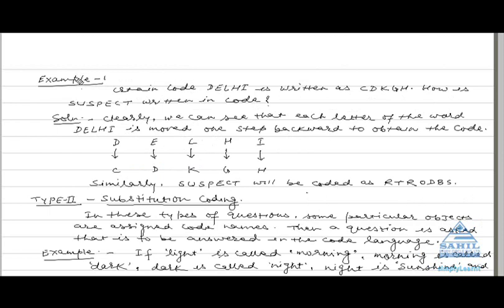We will discuss letter coding with the help of an example. In a certain code, DELHI is written as CDKGH. How is SUSPECT written in code? Solution: clearly we can see that each letter of the word DELHI is moved one step backward to obtain the code. D implies C, E implies D, L implies K, H implies G, and I implies H.